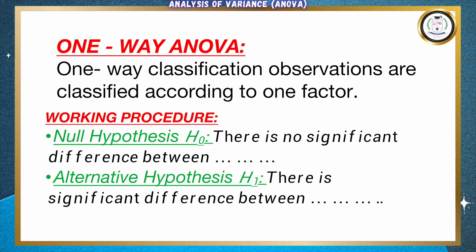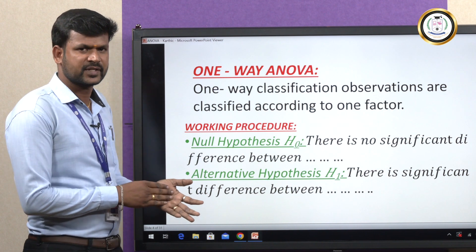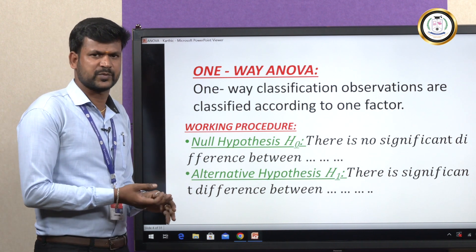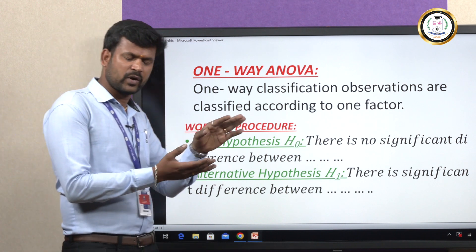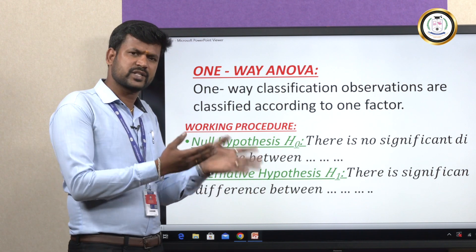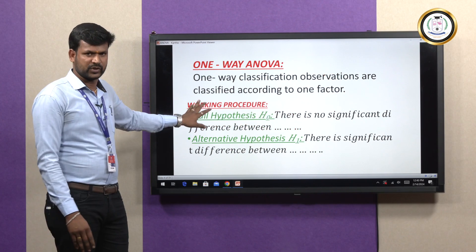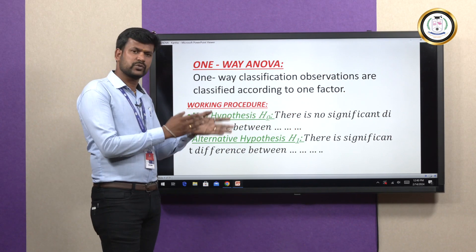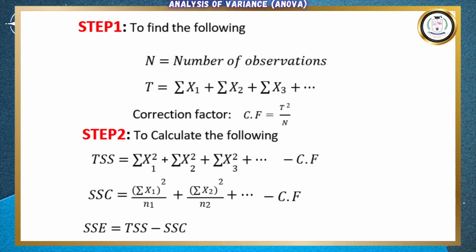Let us see one-way. One-way is a classification where observations are classified according to one factor. Here we are going to discuss about hypothesis. Hypothesis has two concepts: null hypothesis and alternative hypothesis. When they have the raised equation, you just accept it — that is considered as null hypothesis. The other one, which you convert to the other side, that is alternative hypothesis.